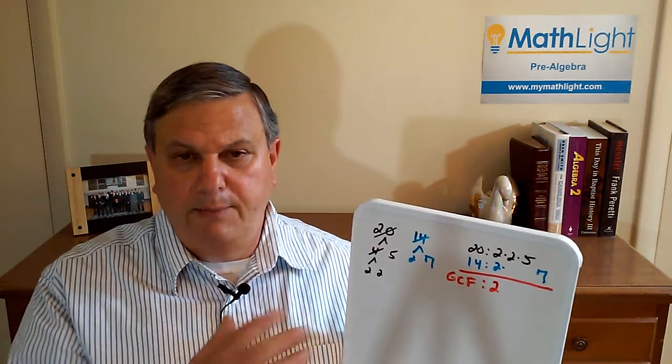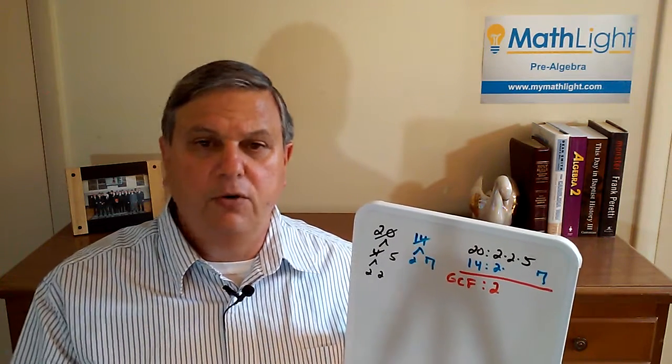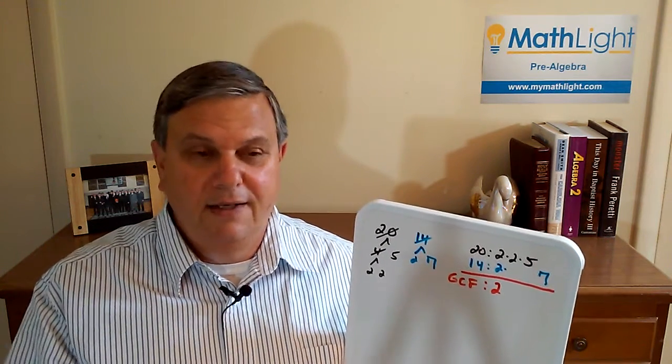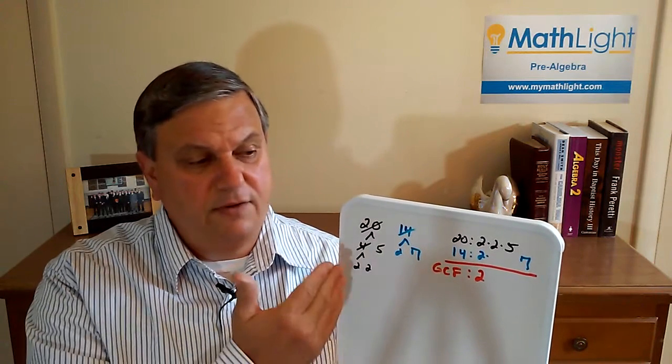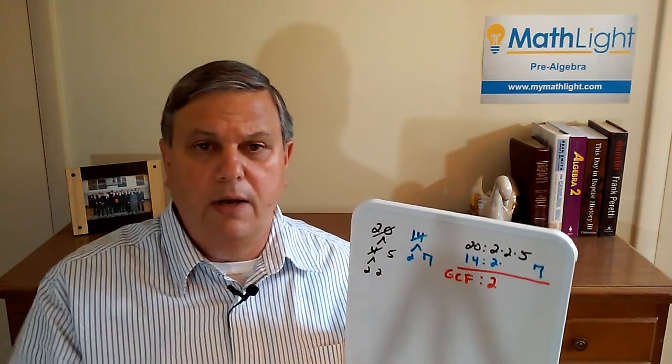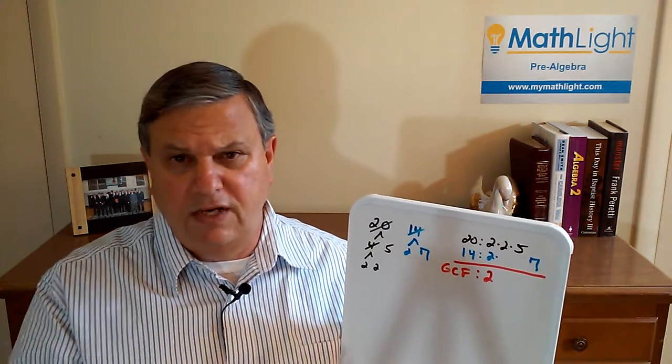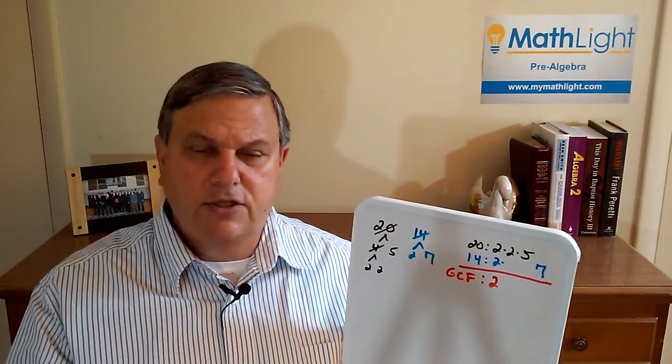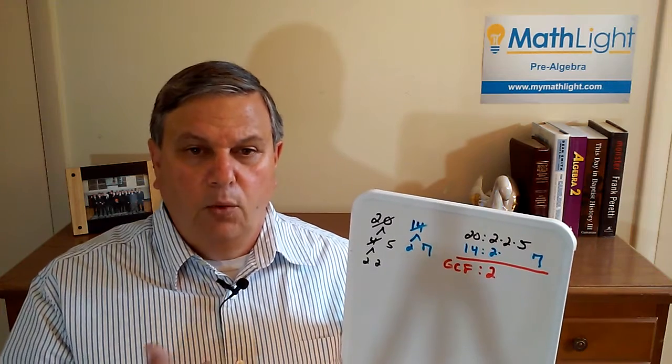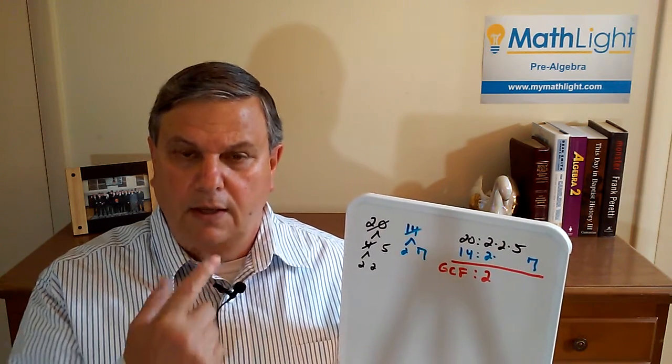It's not the purpose of this post to explain all that, but you understand it's the largest factor that divides into all the numbers being considered. In this case, we have the 20 and the 14. You could have three or more, but the greatest common factor...